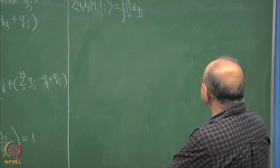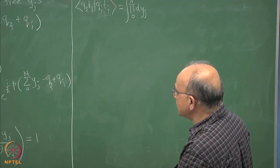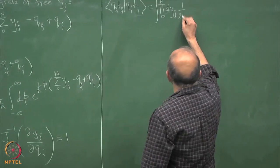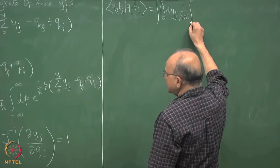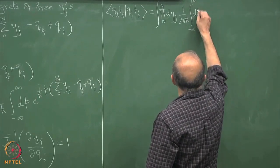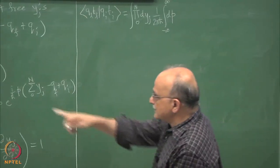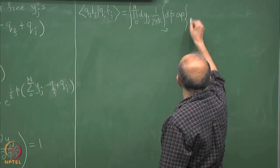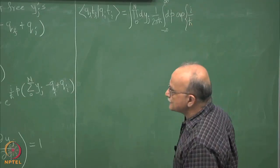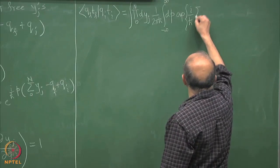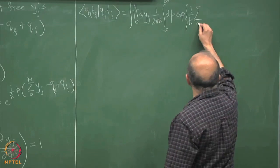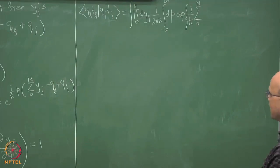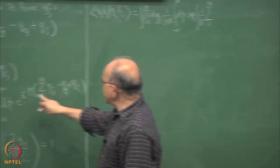So let us just see — we have this integral, and then we can put a 1 over 2πħ and then we can put an integral from minus infinity to infinity over dp. Then we can put in that expression: the exponent of i over ħ, sum over 0 to n plus sum over 0 to n. In this sum over 0 to n, I will try to include this piece as well.